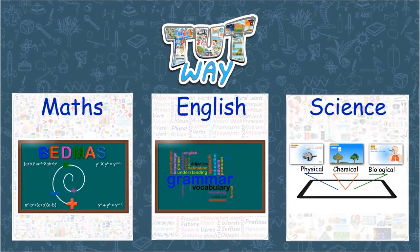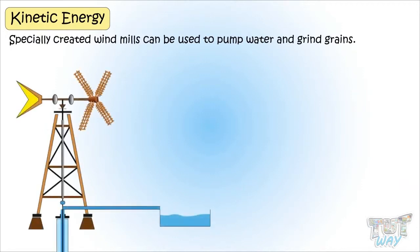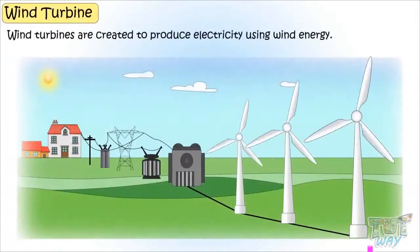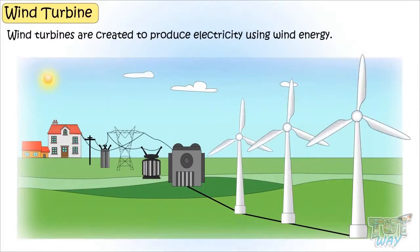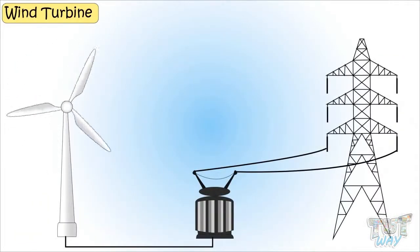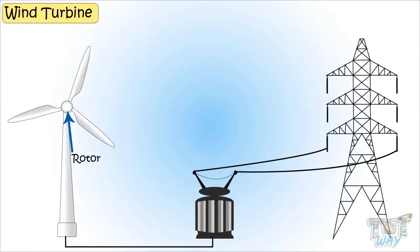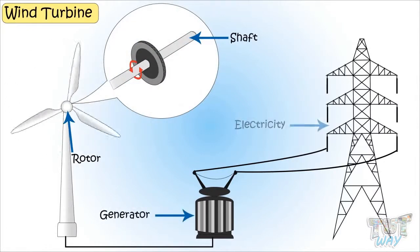Specially created windmills can be used to pump water and grind grains. Big wind turbines are created to produce electricity using wind energy. Kinetic energy of moving air or wind turns the blade around the rotor, and this rotor is attached to the main shaft, to the generator, that generates electricity.